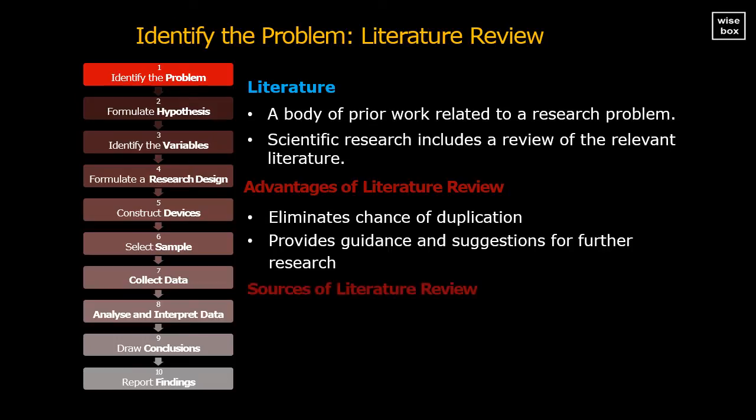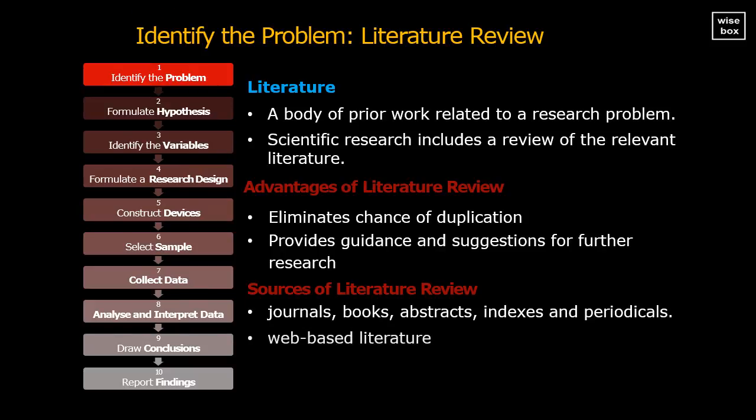Sources of literature review: Different sources of literature review include journals, books, abstracts, indexes, and periodicals. Web-based literature also helps researchers to explore scientific and technical literature. It contains abstracts of articles from most journals publishing research. If an abstract is useful, entire articles can be accessed for additional information.